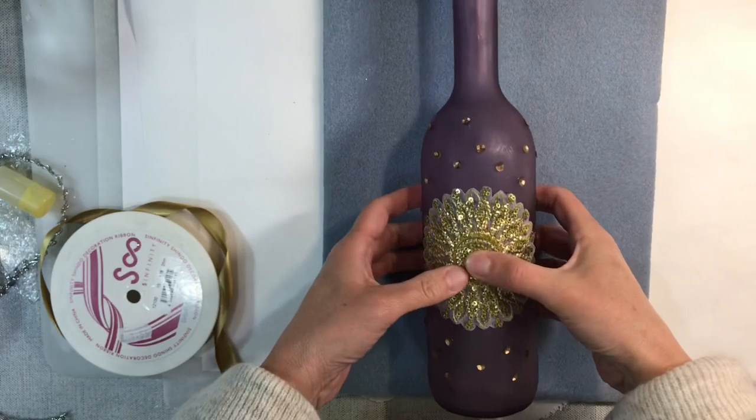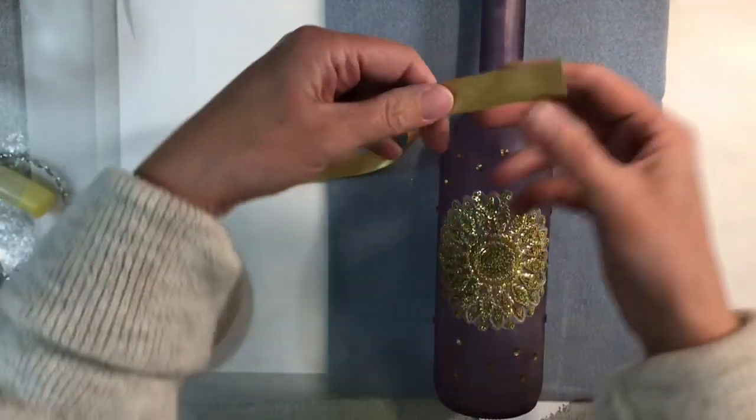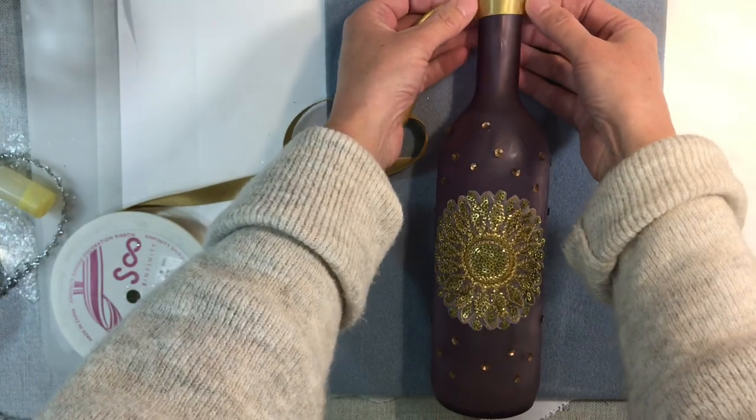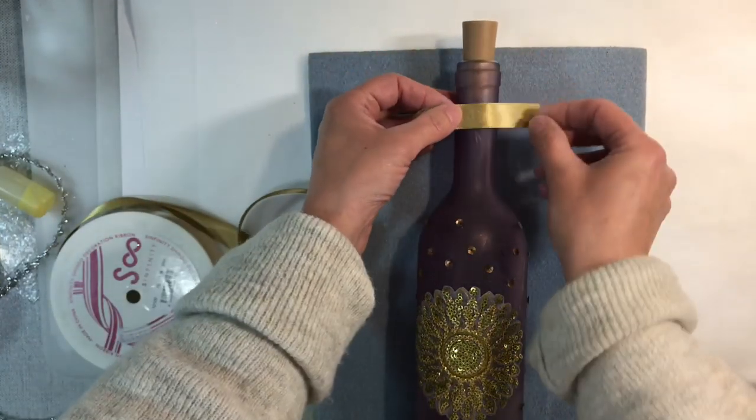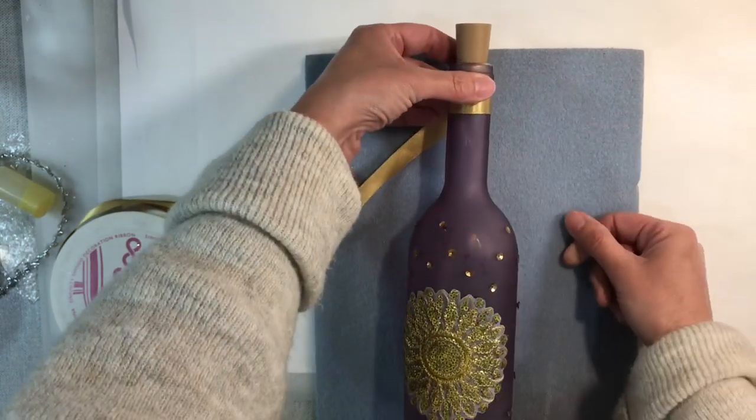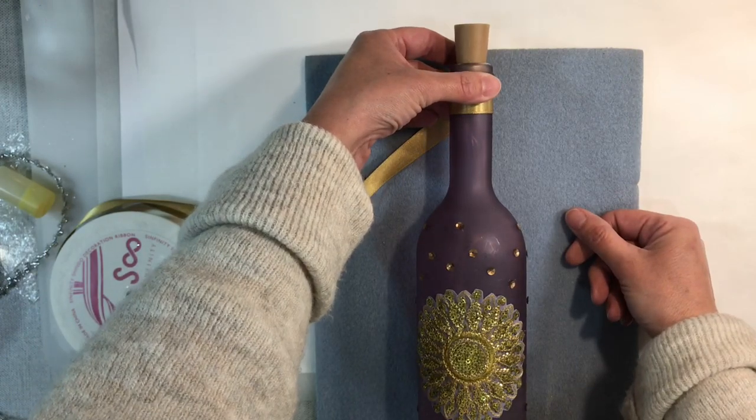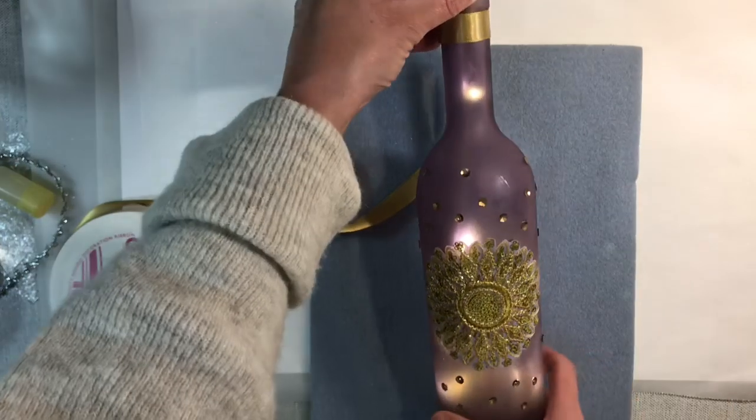I'm just going to pop it on here just to protect the sequins because what I want to do now, just to finish it off, I just want to add just a tiny bit of gold ribbon just around the top. I'm just going to use some Fabri-Tac for that. And that's that one. Job done. Let me just switch the lights on.